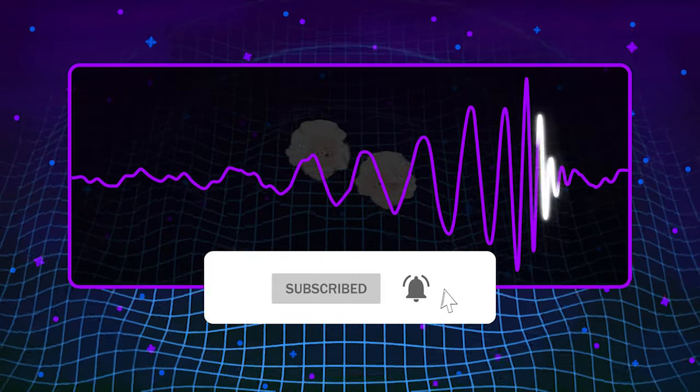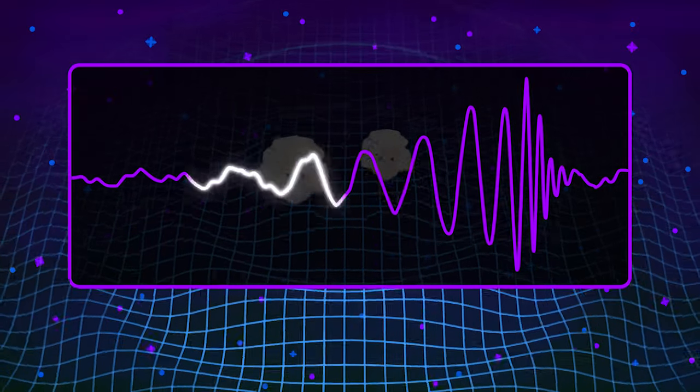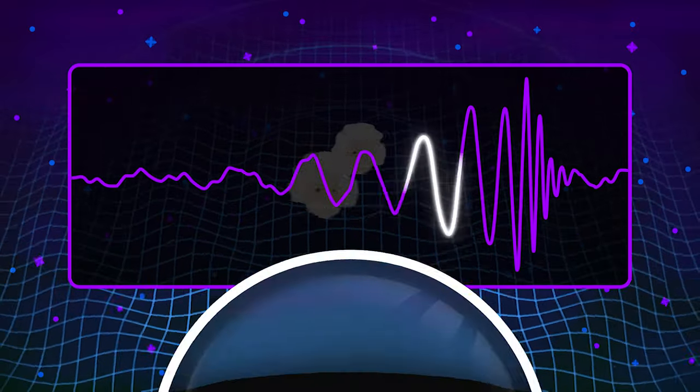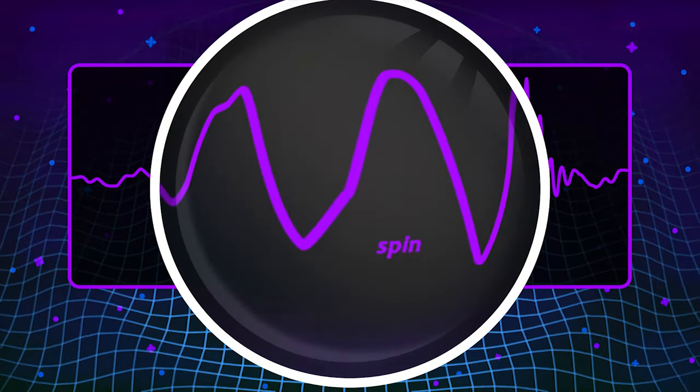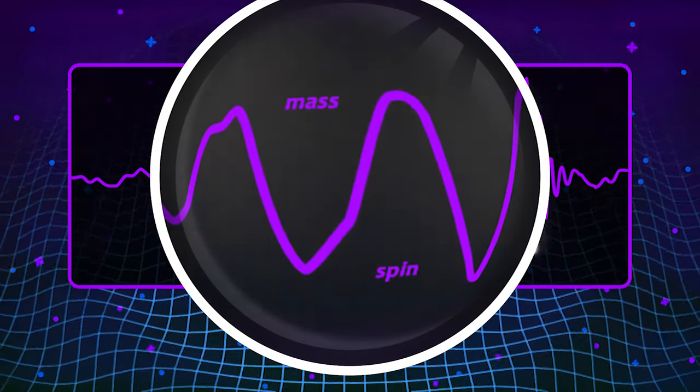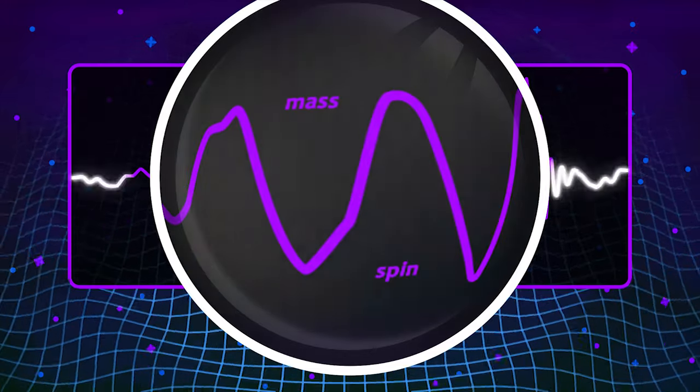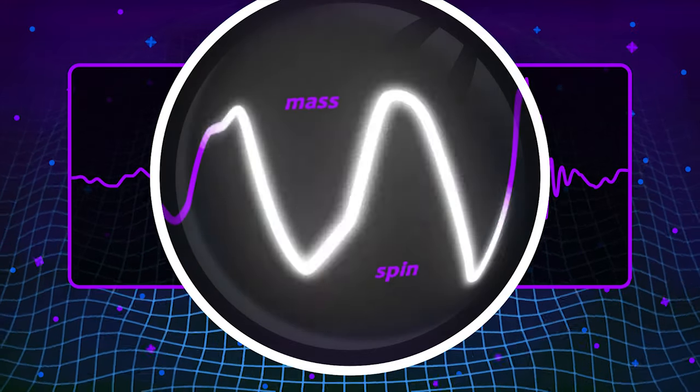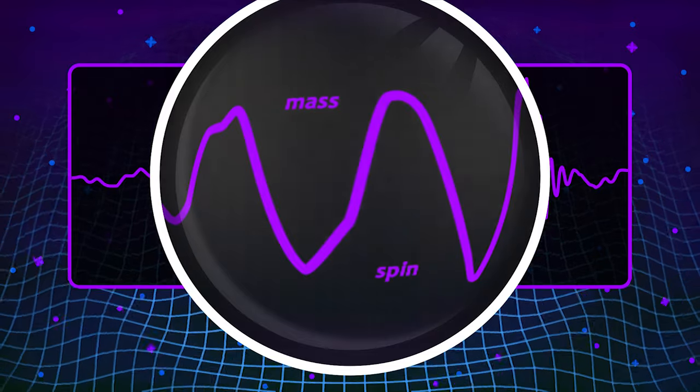Gravitational waves produced by black holes encode valuable information about these individual black holes. For example, it is possible to deduce their masses by analyzing the gravitational wave signal coming from them. So far, more than 10 such events have been detected, and the number is growing.